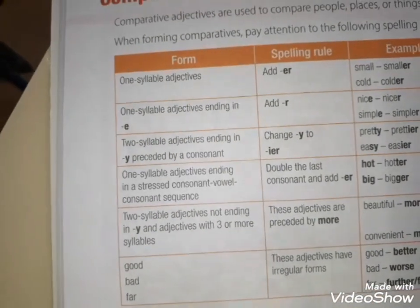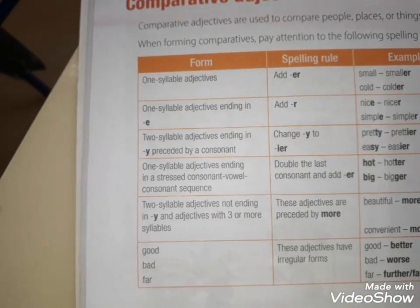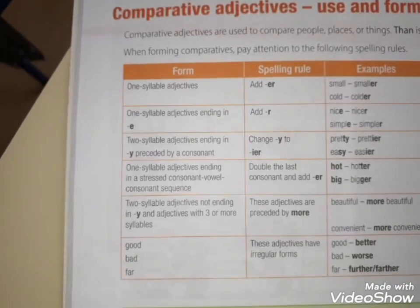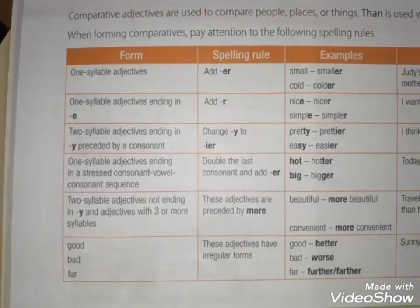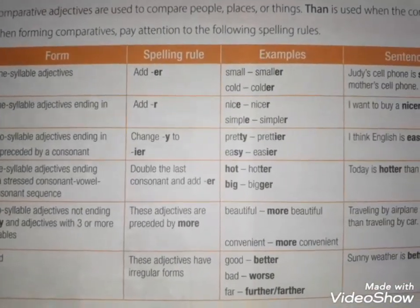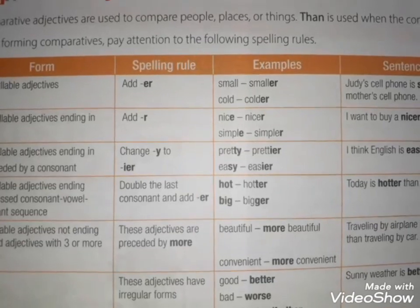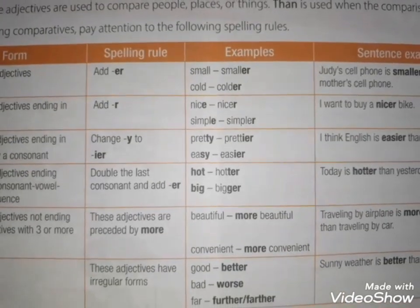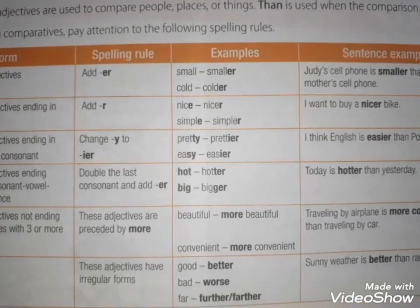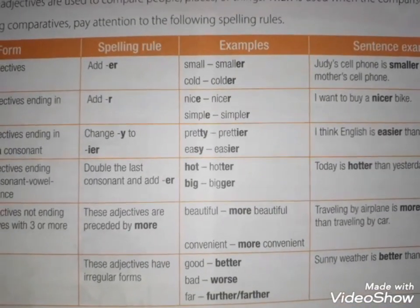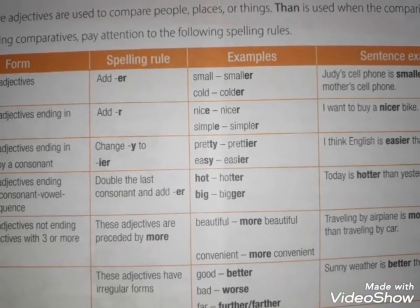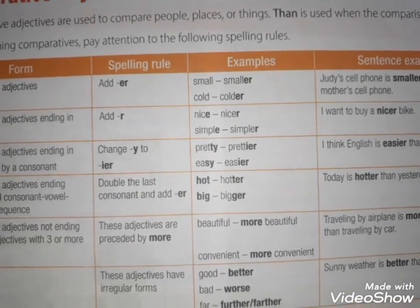Adjetivos de uma sílaba terminando em consoante-vogal-consoante: dobra-se a última consoante. Hot, quente → hotter, mais quente que. Big, grande → bigger, maior que.